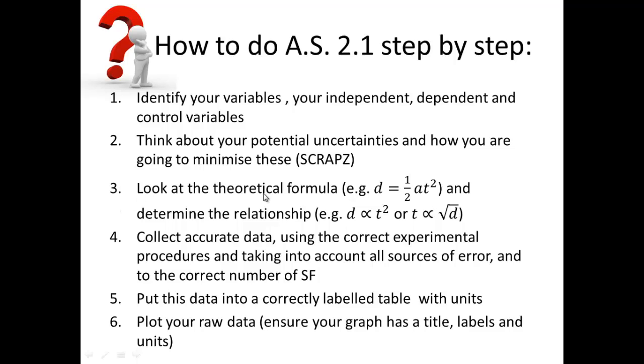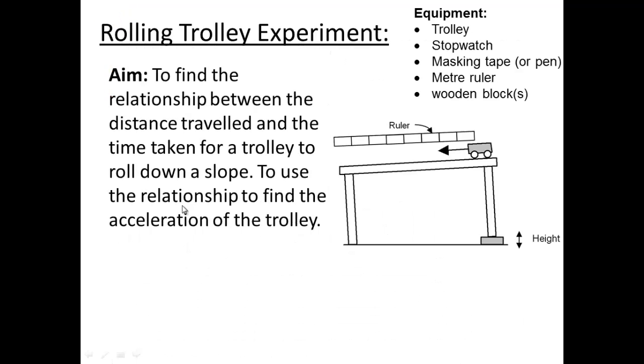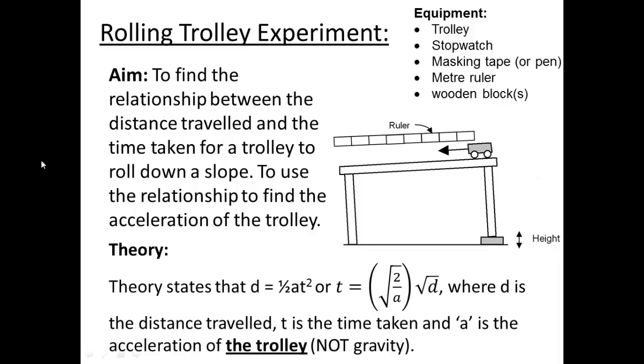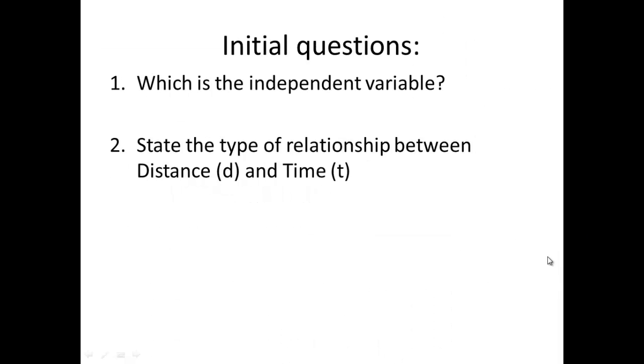Step number three: look at the theoretical formula. In our case it is d = ½at² because the equation we're doing is a rolling trolley. The aim is to find the relationship between distance traveled and time taken for a trolley to roll down a slope, and to use this relationship to find the acceleration of the trolley. We also have t = √(2/a) × √d, both equivalent formulas. The idea of this experiment is to find a, which is the acceleration of the trolley, not of gravity.